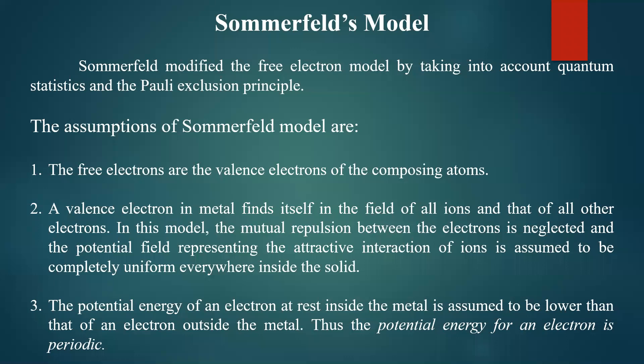All valence electrons contribute to conduction, but not all free electrons are available for conduction — they are available in accordance with the quantum distribution statistics. This explains why copper and silver have higher conductivity, which can be explained using the Sommerfeld model.